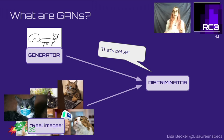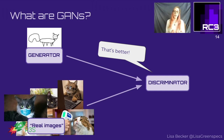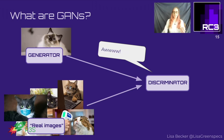It then gets feedback from the system: is this a real image or a fake image generated by the generator? The discriminator's goal is to differentiate the two - to say 'this is fake' and 'this is real.' The generator's goal is to make pictures as realistic as possible. These two neural networks compete against each other - that's the adversarial part of generative adversarial networks. This process continues until the generator can produce pictures indistinguishable from real images.